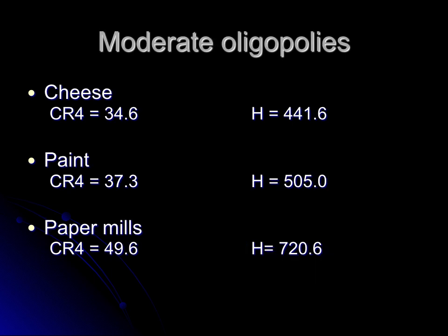Looking at moderately concentrated oligopolies, the Herfindahl Index falls in that middle range. The four-firm concentration ratio for cheese was 34.6 percent, giving a Herfindahl Index of 441.6. For paint, a concentration ratio of 37.3 percent corresponds to a Herfindahl Index of 505. For paper mills, the CR4 is just under 50 percent with a Herfindahl Index of 720.6. These are moderate oligopolies — more concentrated than unconcentrated markets, but not as tight as the most concentrated ones.